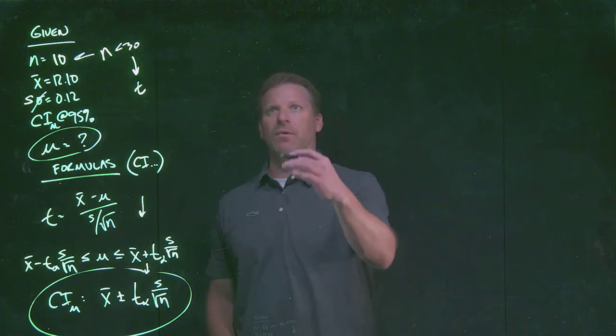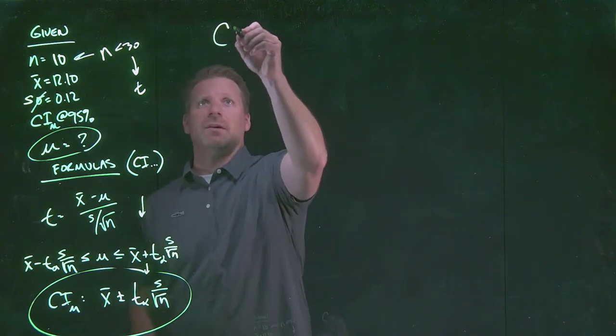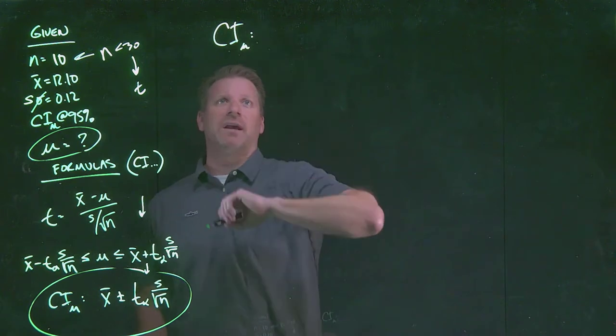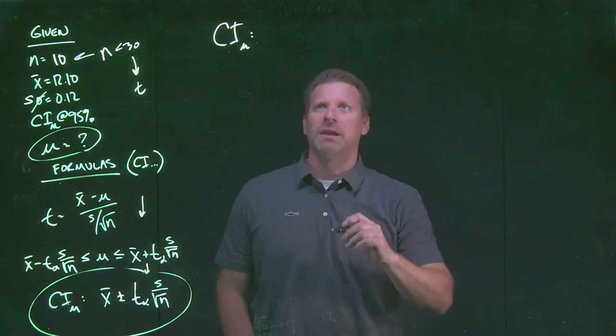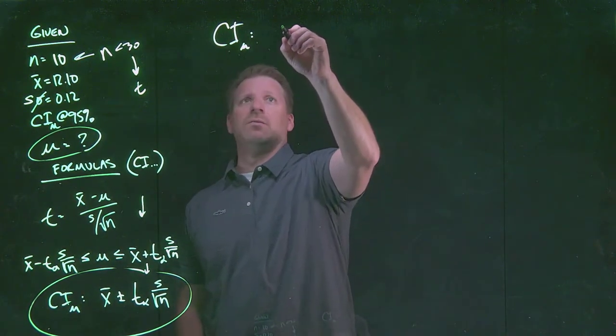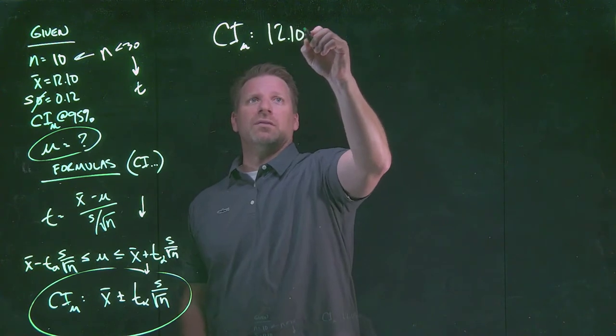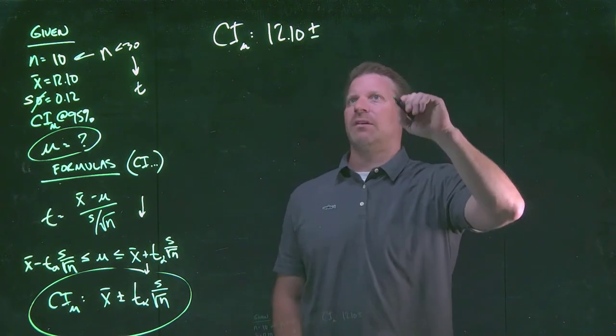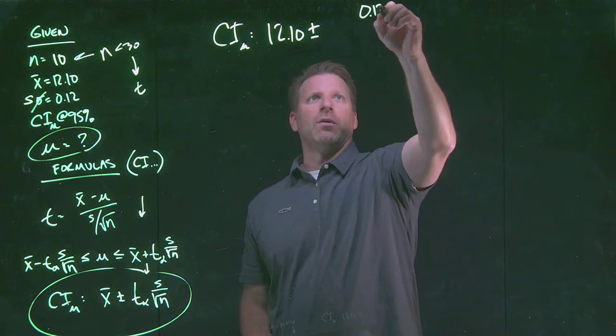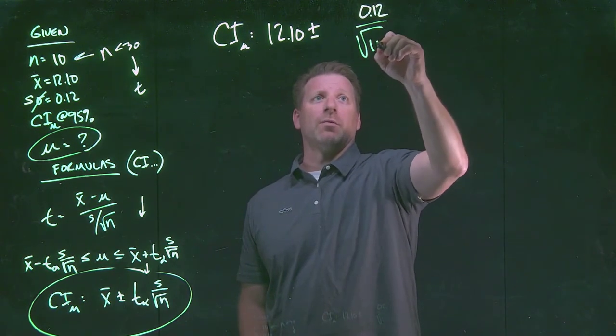Just like we did before, we're going to load in the information that we know. We're looking now for a confidence interval for a population mean. Our sample value was 12.10 plus and minus, we'll skip T for just a moment. We've got the 0.12 divided now by our square root of 10.